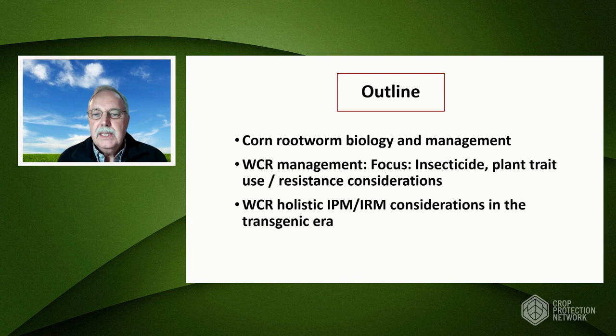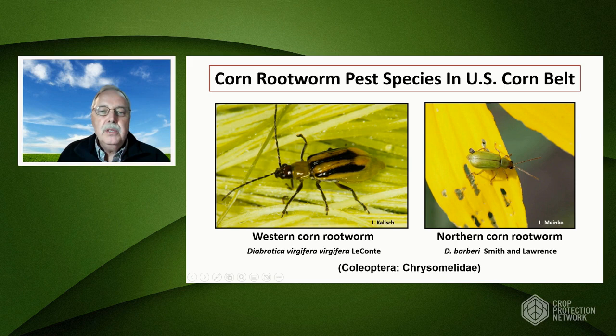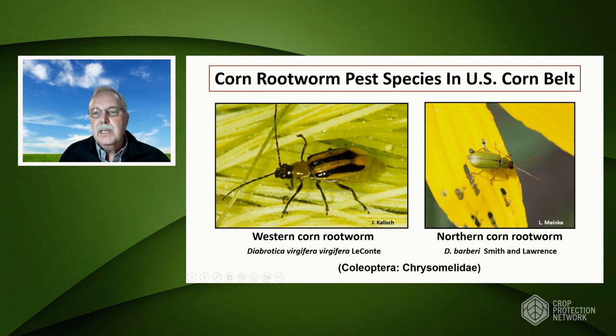If you're not familiar, we have two corn rootworm species in North America that are our primary pest species in the corn belt. I'm going to be talking chiefly about the yellow and black stripe beetle, which is the Western corn rootworm. The Northern corn rootworm, the green beetle, is more localized and not as serious a pest across the whole corn belt. So everything will be focused on the Western corn rootworm.